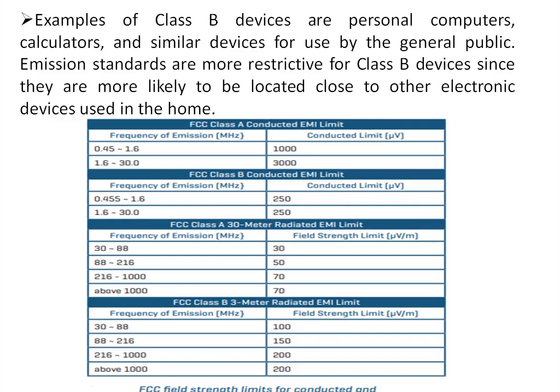Emission standards are more restrictive for Class B devices as they are more likely to be located close to other electronic devices used in the home, like microwave ovens and refrigerators. FCC Class A conducted EMI limit is 1000 microvolts for 0.45 to 1.6 megahertz and 3000 microvolts for 1.6 to 30 megahertz. For Class B devices the limit is 250 microvolts, which is much less. For radiated EMI, FCC Class A uses a 30-meter limit and Class B uses a 3-meter limit, since household devices are located close together.